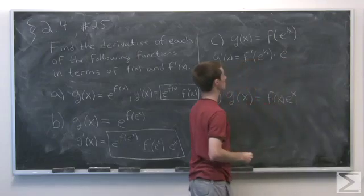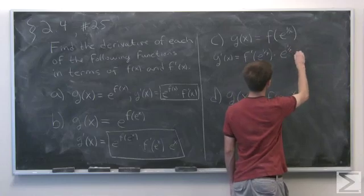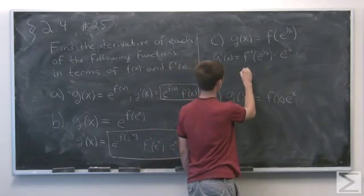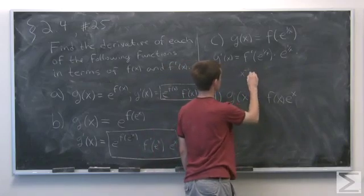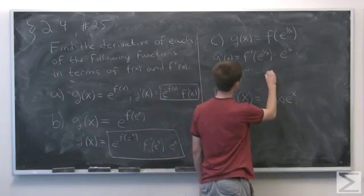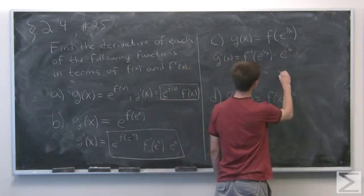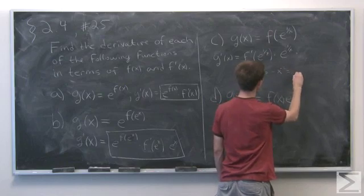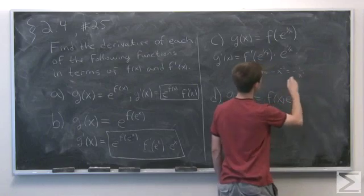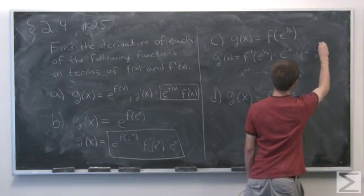So we have e evaluate at the point 1 over x times the derivative of 1 over x, which we see derivative of 1 over x is the same as x to the minus 1. So applying the power rule, we see this is minus x to the minus 2, or minus 1 over x squared. So we're really multiplying this by negative 1 over x squared.